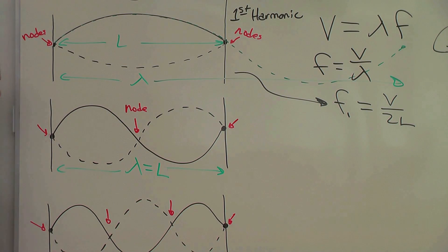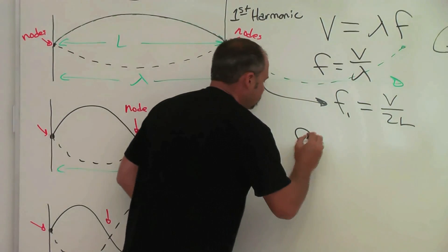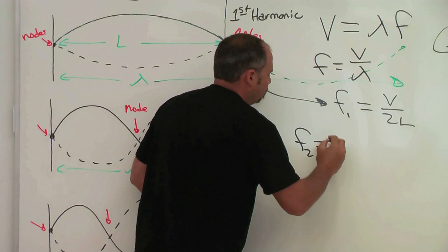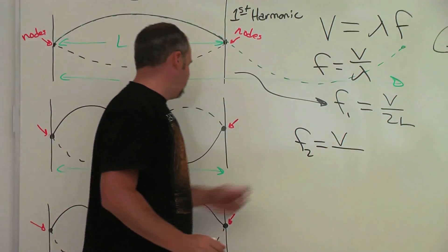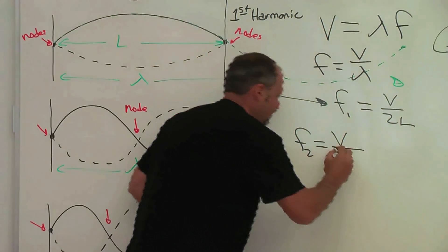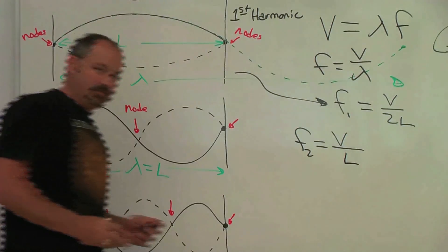So very simple. For the second one, frequency is the speed over the wavelength, and since the wavelength is also equal to the length of the string, we just have this.